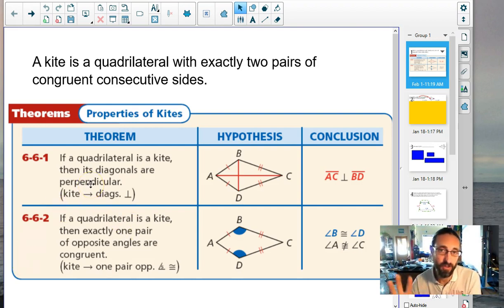This whole chapter 6 has been full of theorems and big concepts and vocabulary. Your next theorem is to talk about kites. A kite is a quadrilateral with exactly two pairs of congruent consecutive sides. If you know it's a kite then the diagonals are perpendicular, very similar to a rhombus except instead of all four sides being congruent it's two and two. Also if a quadrilateral is a kite then one pair of opposite angles are congruent. So B and D are congruent but A and C are not.